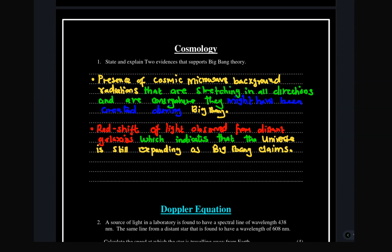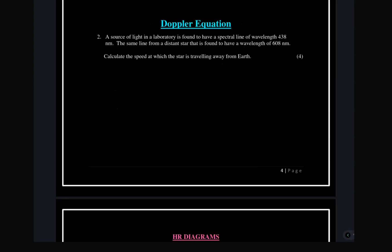Another part you need to prepare on is the Doppler equation — how to do the calculation — which will enable you to work out the speed at which a galaxy is moving away from the earth. Consider the scenario whereby a source of light in a laboratory is found to have a spectral line of a certain wavelength. That wavelength is going to be our reference wavelength because we are measuring it from the lab on earth.